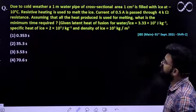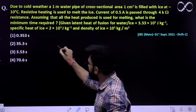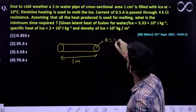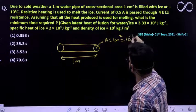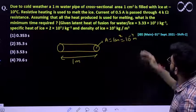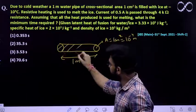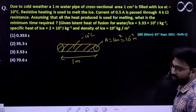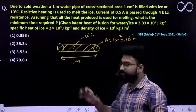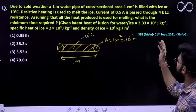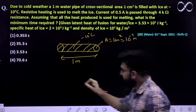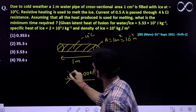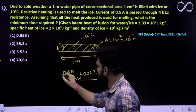The question says: due to cold weather, a 1-meter water pipe of cross-sectional area 1 centimeter square — so this pipe has a length of 1 meter and cross-sectional area of 1 cm², which is 10⁻⁴ m². It is filled with ice at minus 10 degrees centigrade. Resistive heating is used to melt the ice — a current of 0.5 ampere passes through a 4 kilo-ohm (4000 ohm) resistance, which is half an ampere.